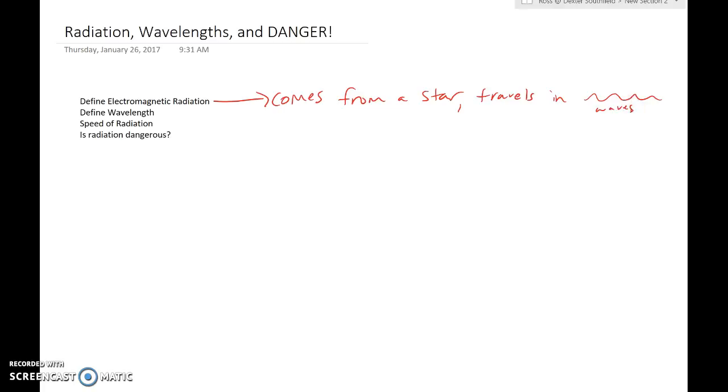So electromagnetic radiation can be light, it could be visible light, it could be UV radiation, it could be x-rays, gamma rays, radio waves, and there's a few others as well. I'm just listing out the first couple that come to mind. So you've probably heard of all of these before, at least in passing.